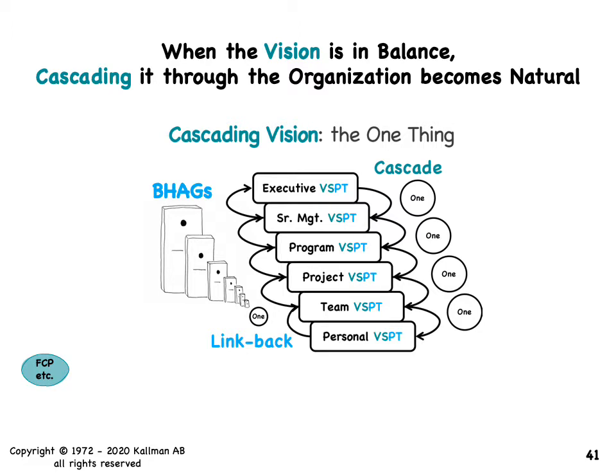At the program management level, line management level, and product management level — they're in that third box — you're going to have a VSPT for all of those as well. And then if you use projects, though more and more companies are just skipping that and doing programs and putting the teams into programs instead, the project will have a VSPT.